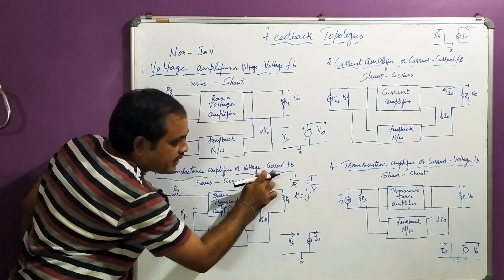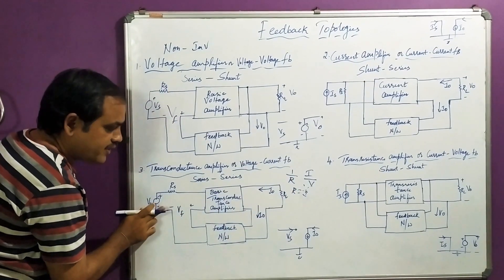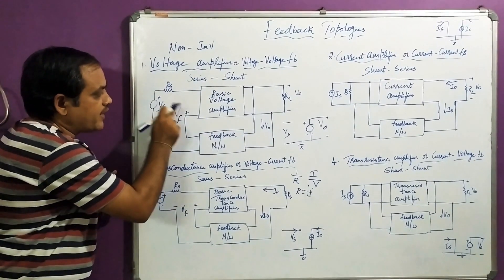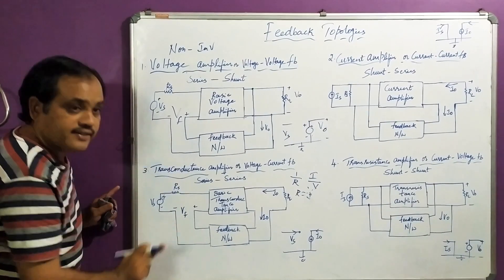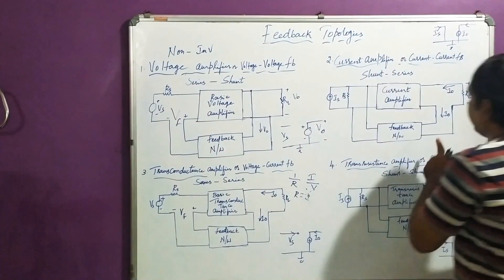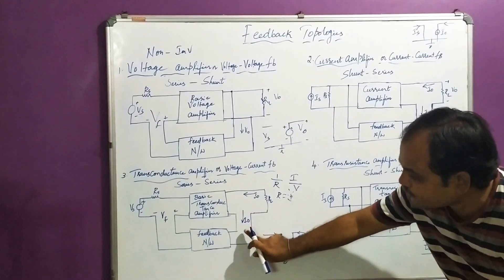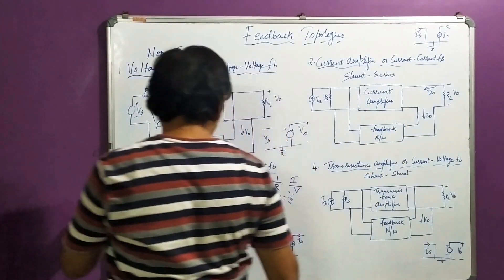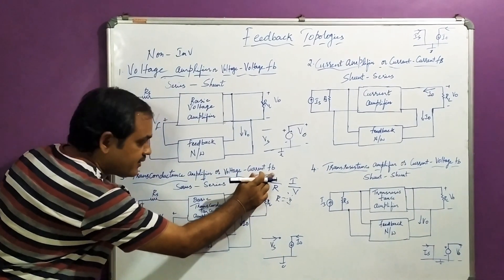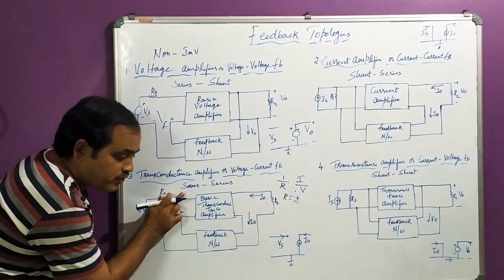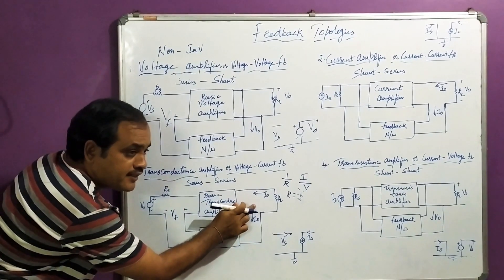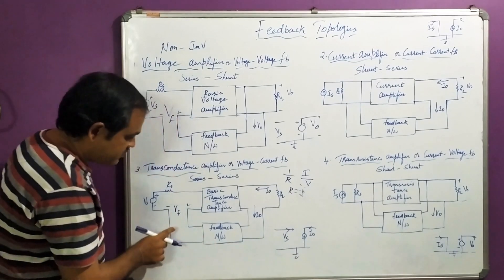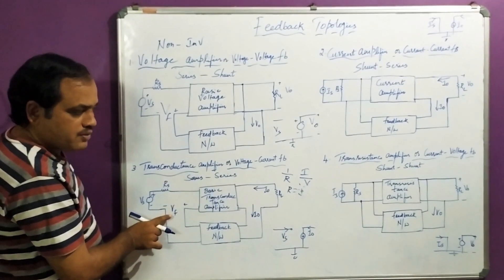Since input side is voltage, it is series — just like in the voltage amplifier. Output side is current, which means it is also series. So this combination makes an amplifier structure called voltage-to-current feedback topology. Therefore this is also called a series-series feedback topology, where output current is sampled and mixed with input feedback voltage.